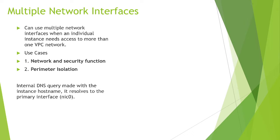Traffic coming from the internet cannot go directly to your private resources like a database or private storage. You will create two interfaces — one public interface and one private interface. Traffic first hits the public interface, then after routing on the VM, it is passed to the private interface from where it reaches your backends.